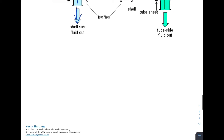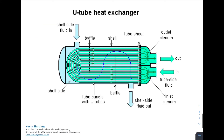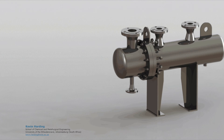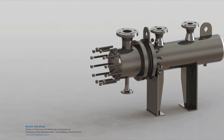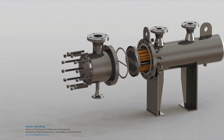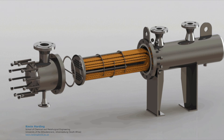A third option is the U-tube heat exchanger. Instead of the two-pass arrangement, the tubes are bent into a U-shape at one end. The hot fluid enters and exits on the same right-hand side, and at the far end all the tubes are bent around. In 3D you can see how the U-shaped tubes fit inside the shell and fold back on themselves.